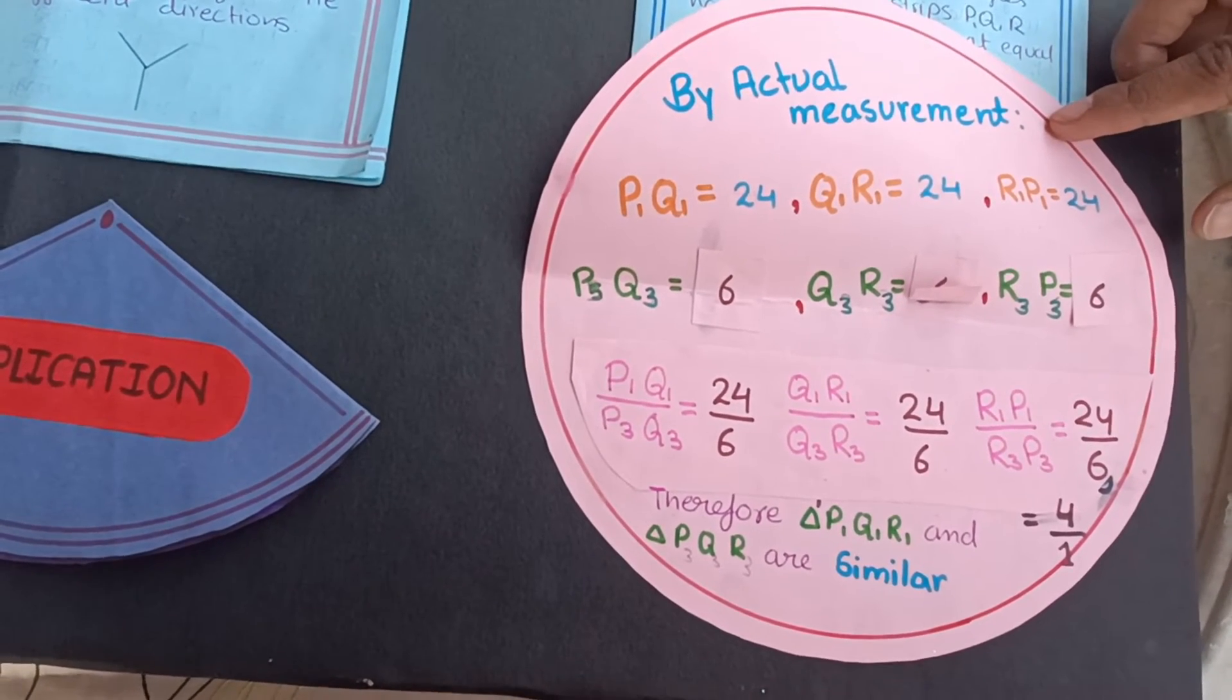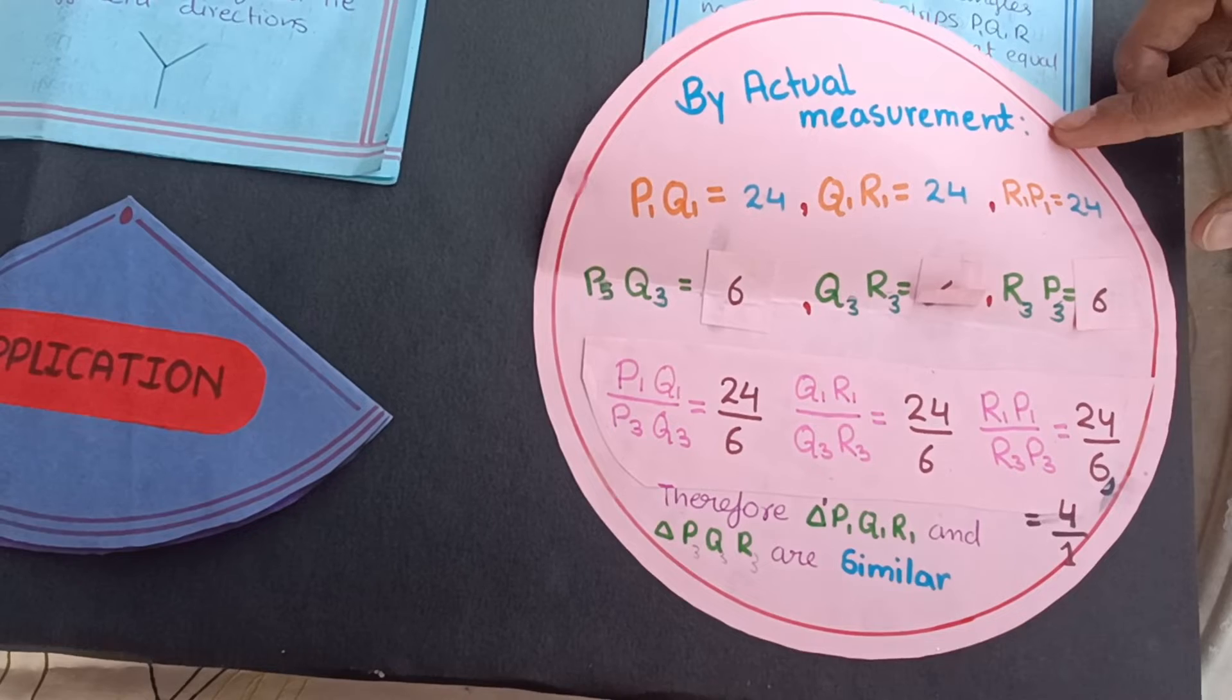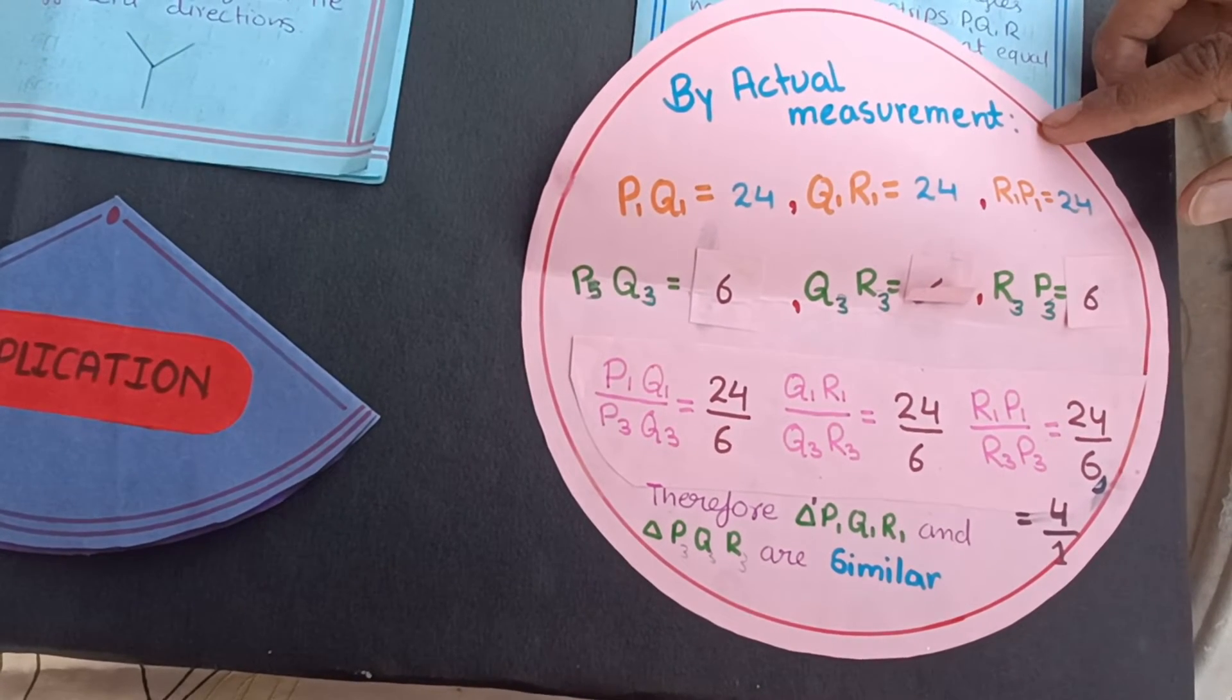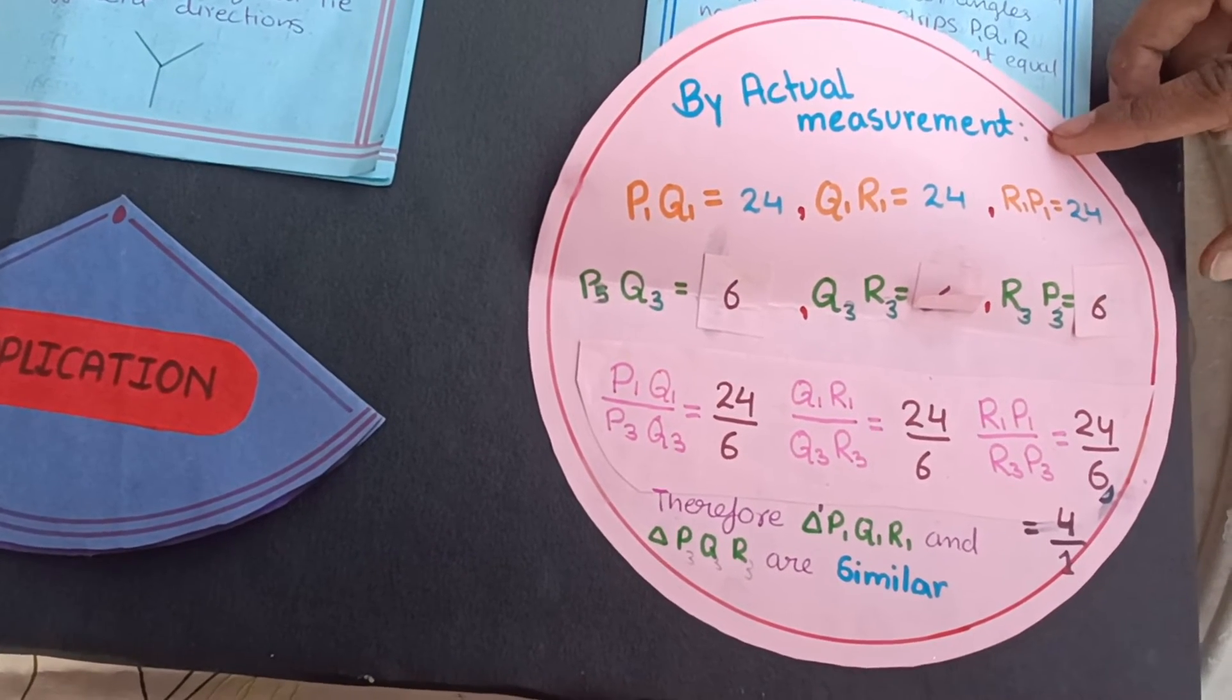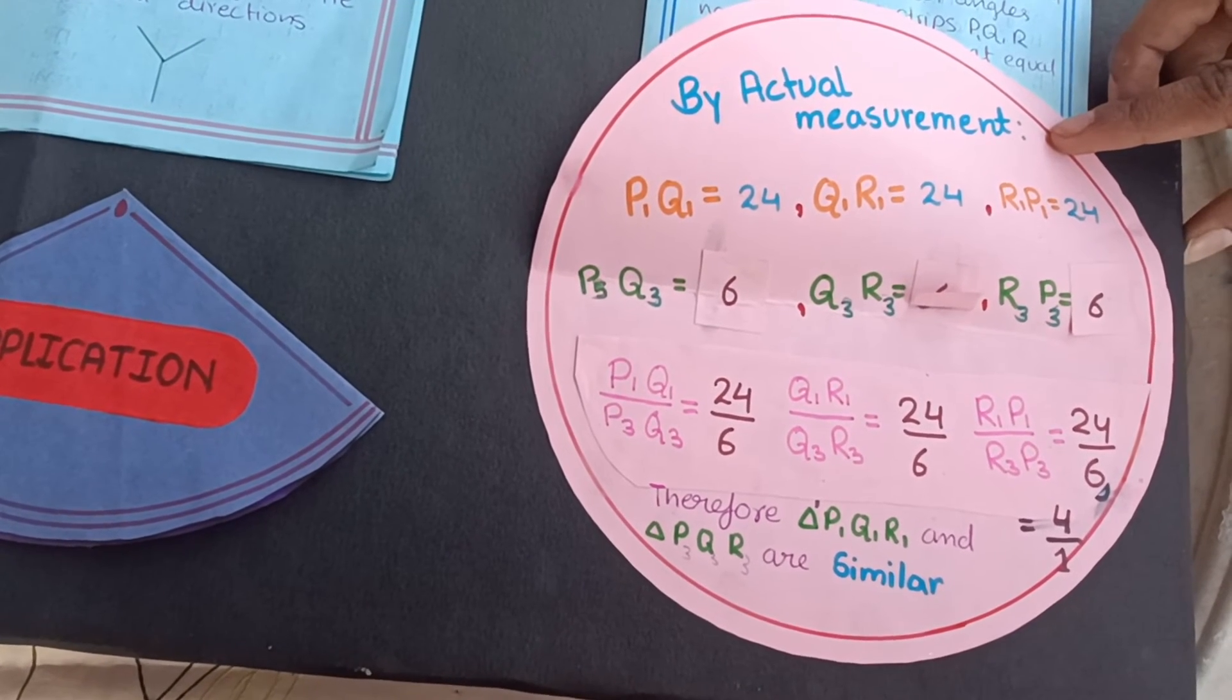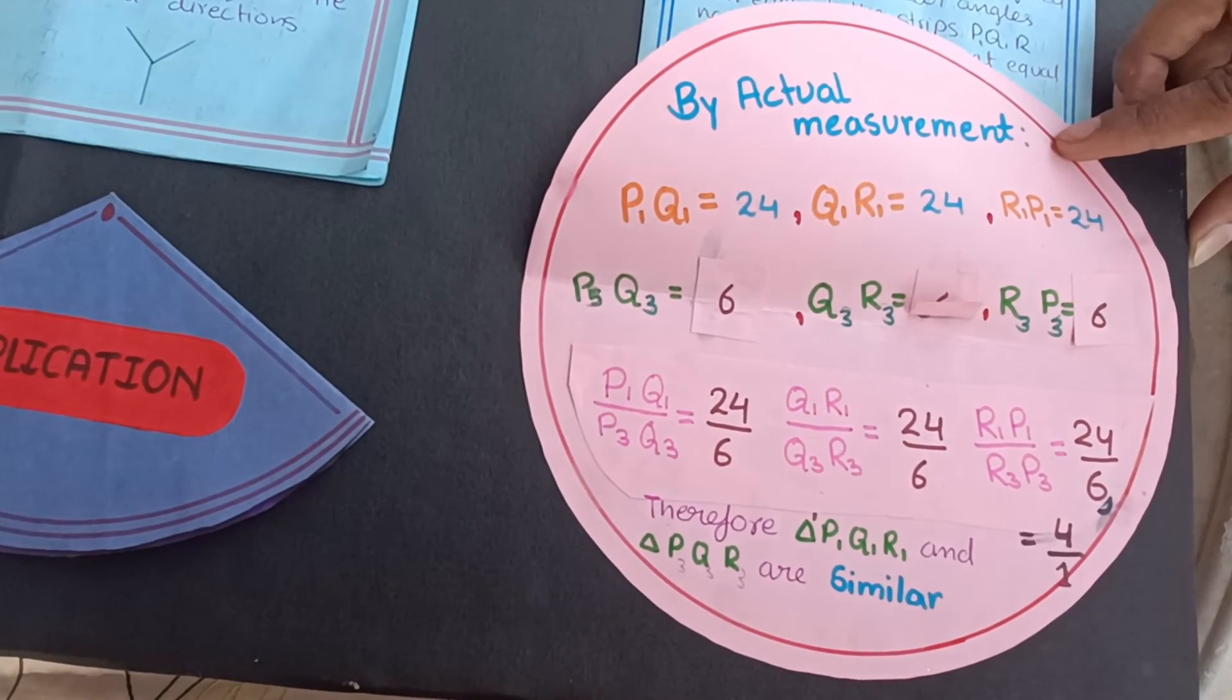When we find ratio of P1Q1 upon P3Q3, we get 24 upon 6. Similarly, on other sides ratio Q1R1 upon Q3R3, we get the same ratio, and R1P1 upon R3P3 is also 24 upon 6. Therefore, triangle P1Q1R1 and triangle P3Q3R3 are similar.